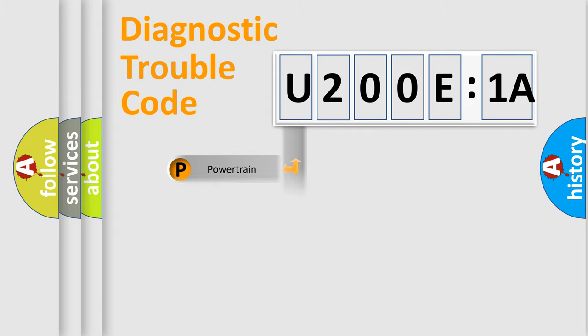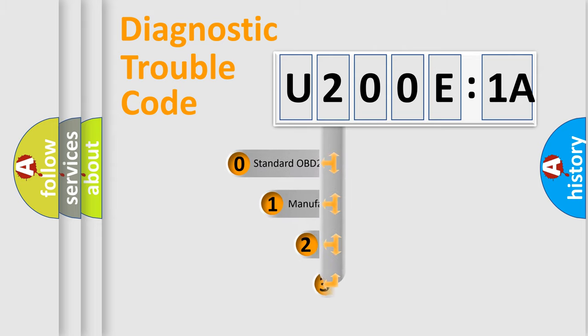Powertrain, Body, Chassis, Network. This distribution is defined in the first character code.